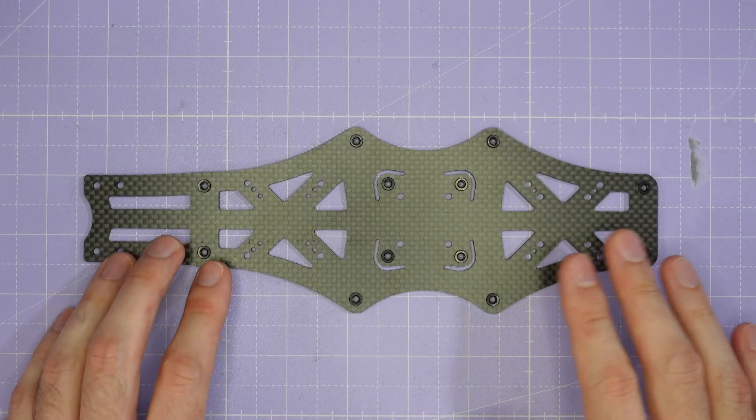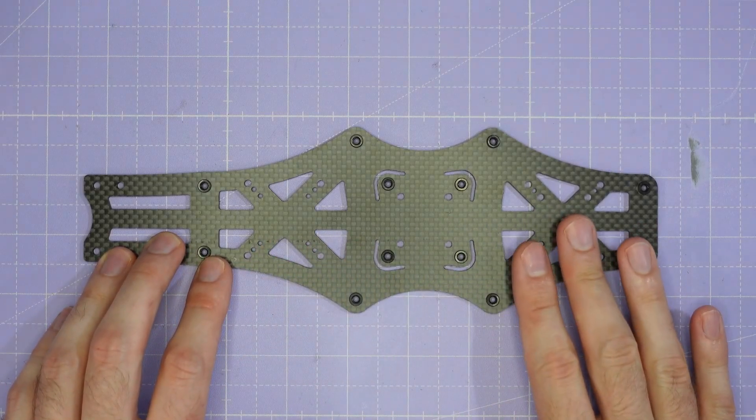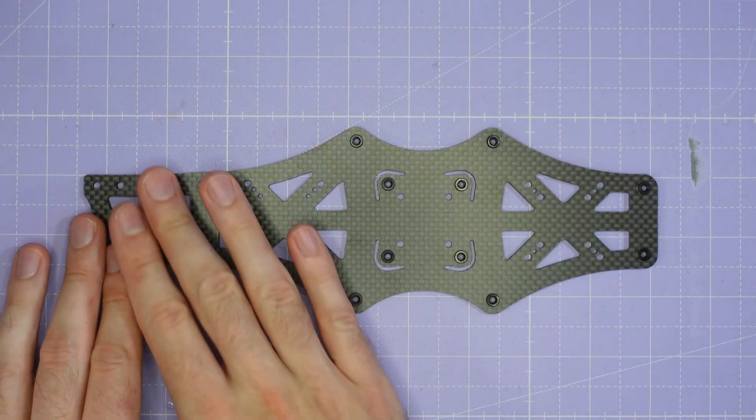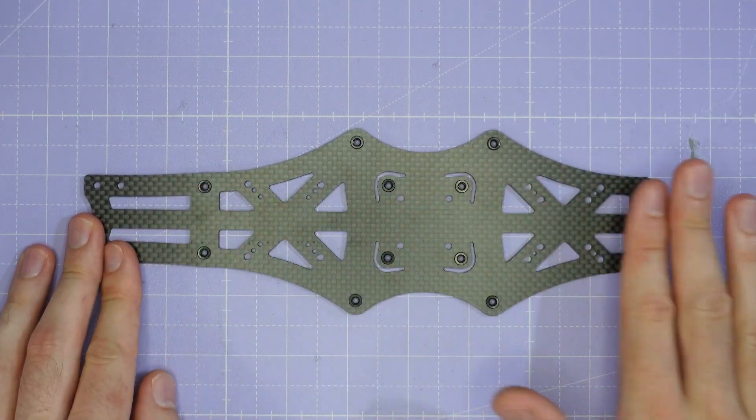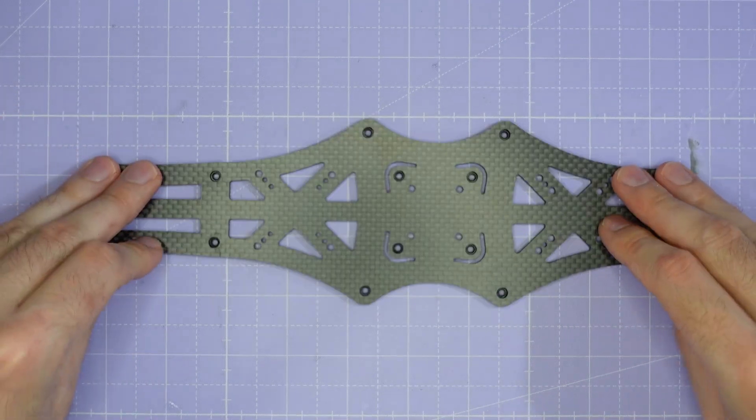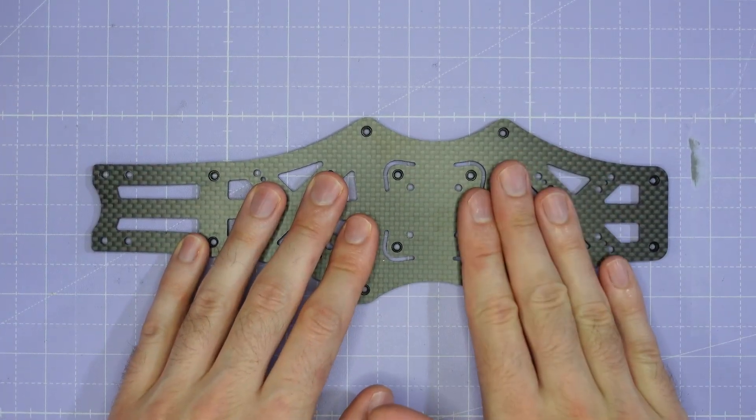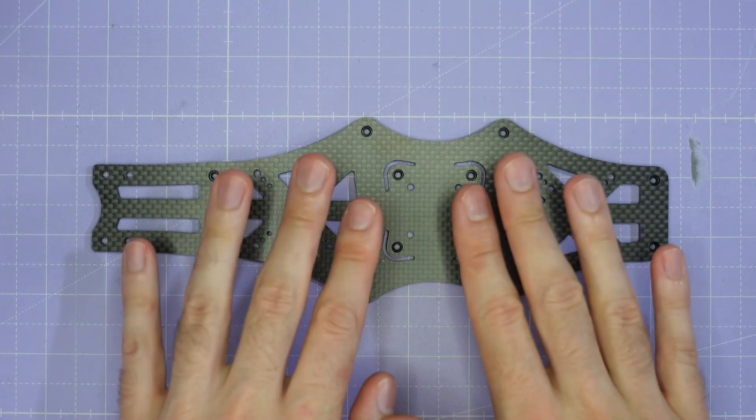Once we've assembled the camera cage it's time to put the arms together and the way we're going to do this is we're going to first take the main plate and work out which side has the press nuts on it. The side with the press nuts needs to face down against the desk and then we can assemble the arms on top of this plate.